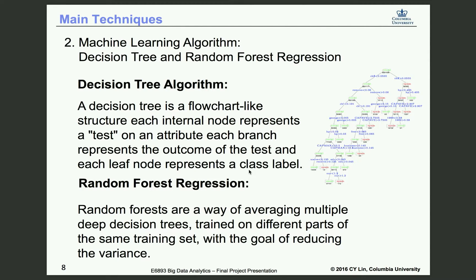For classification, the learning algorithms we applied are decision tree and random forest regression. Trees that are grown very deep tend to learn highly irrelevant patterns, so they overfit their training set — they may have low bias and very high variance. That's why we also chose random forest, since it is a way of averaging multiple deep decision trees, which reduces the variance.